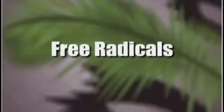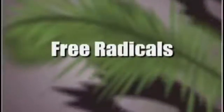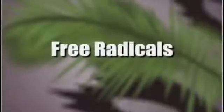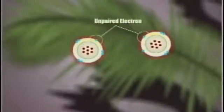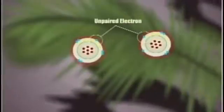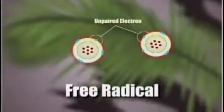Our bodies are comprised of billions of molecular cells held together by electronic bonds. Sometimes these molecules are held together by a weak bond and can split apart, resulting in an unstable molecule with an unpaired electron. This molecule is known as a free radical.